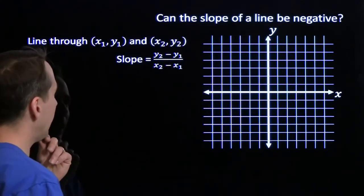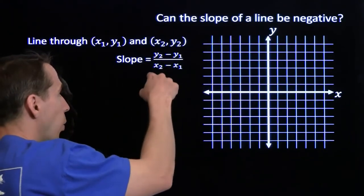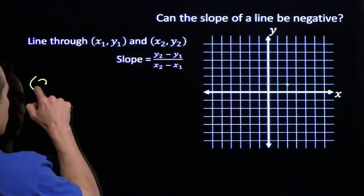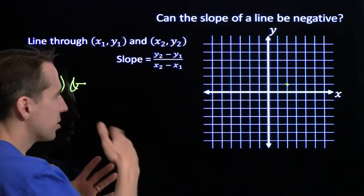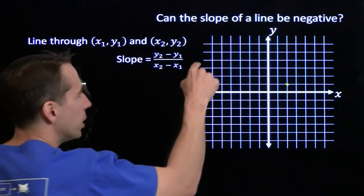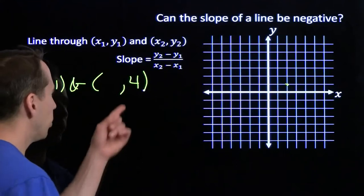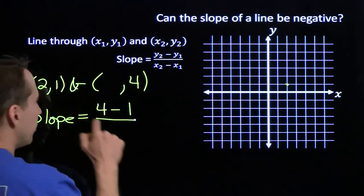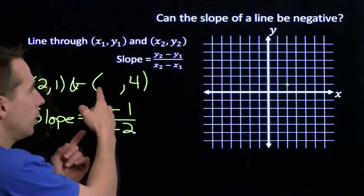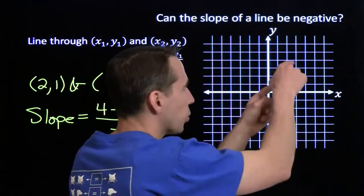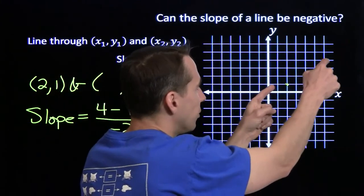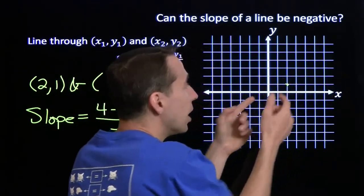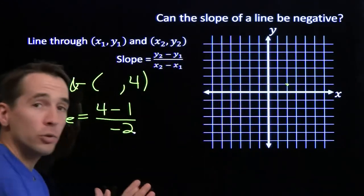Here we have the definition of slope: the difference in the y-coordinates divided by the difference in the x-coordinates. Let's see if we can make a line that has negative slope, starting with a point. We want to combine that with some other point. If I choose a second point where y equals 4, my slope will be the difference in y-coordinates divided by the difference in x-coordinates. If I pick an x-coordinate greater than 2 — like 3, 4, 5, or 6 — the denominator is positive. Positive divided by positive gives a positive slope. So all those points produce lines with positive slope.